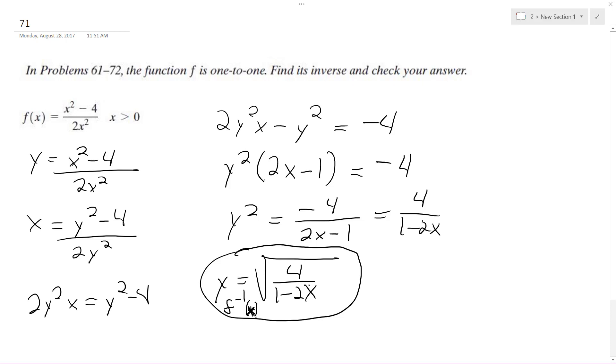Plug and check. Technically you're supposed to do it both ways but I'm only going to do it one. f of f inverse of x, so I'm going to put in square root of 4 over 1 minus 2x, squared minus 4, over 2 times square root of 4 over 1 minus 2x, squared. This radical should be down, and this is squared, so this becomes...